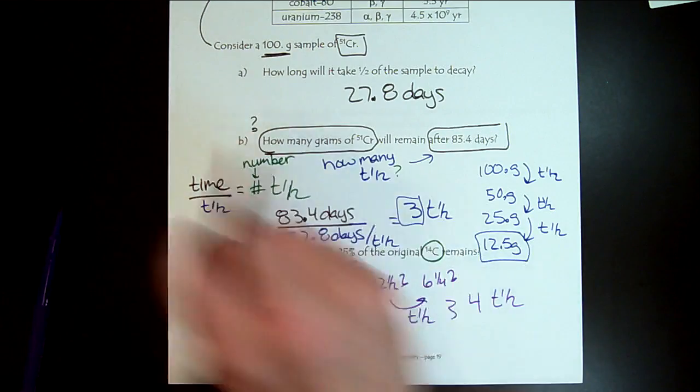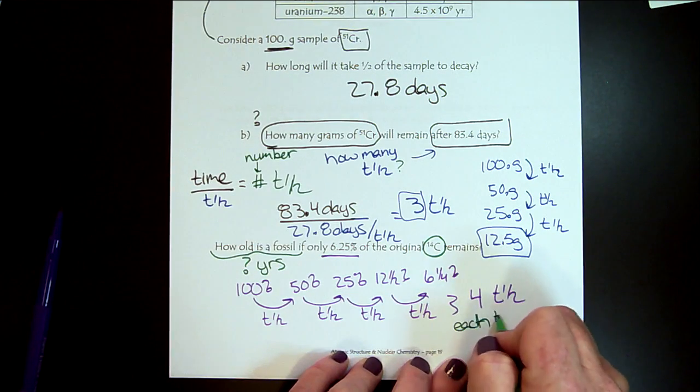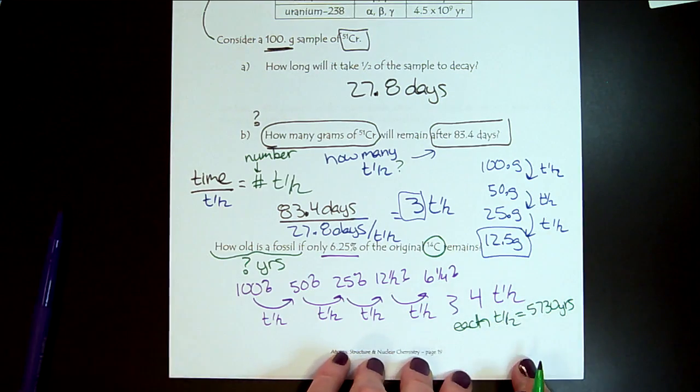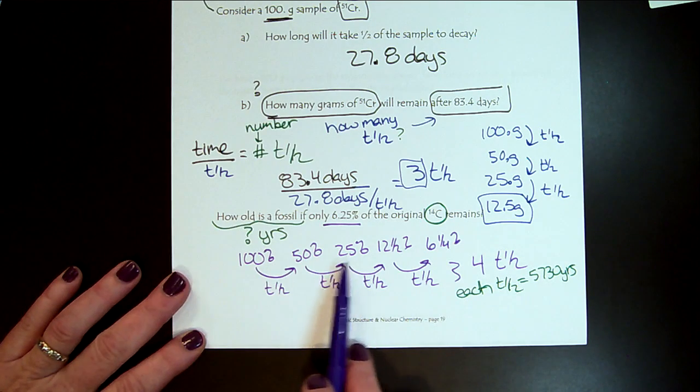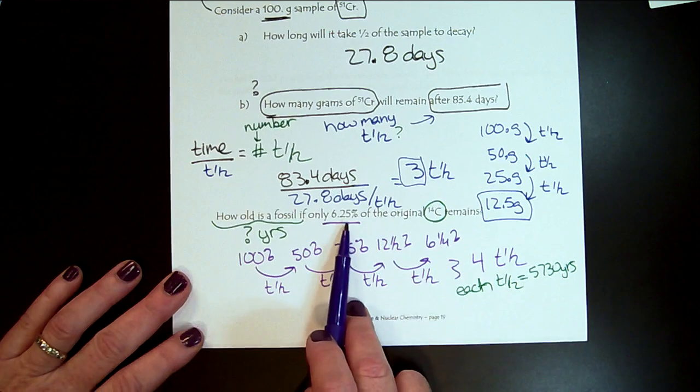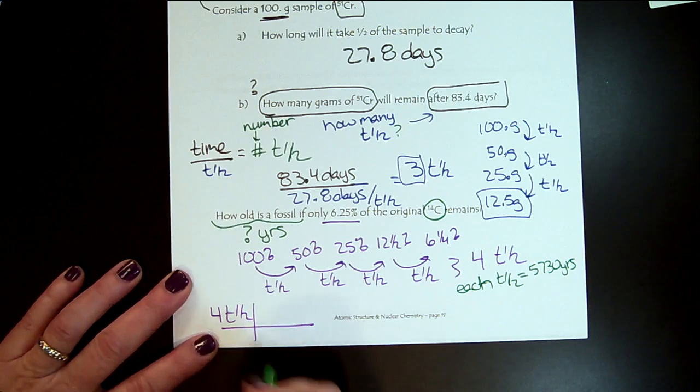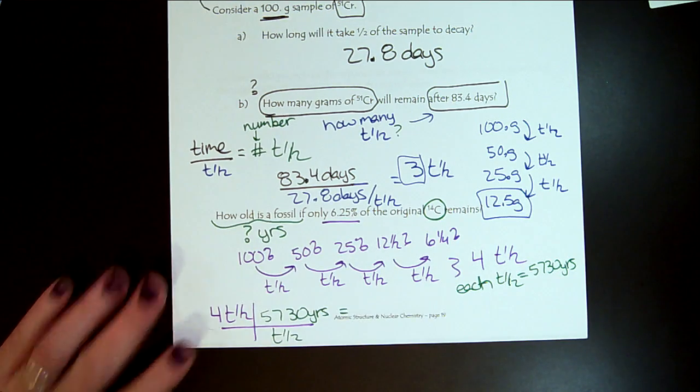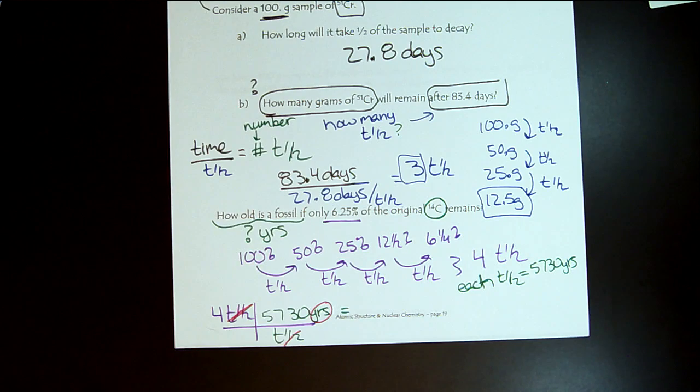And each half-life, if we look up above, each half-life is 5,730 years. So we could even set this up like unit analysis. So using our understanding of the process of radioactive decay, we realize that it takes four half-lives for a sample to drop to 6.25 percent if it's original. So we would need four half-lives. And we know that each half-life is 5,730 years for carbon-14. So now the half-lives are going to cancel and we're left with years, which is perfect because we're trying to figure out how old the fossil is.